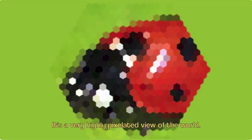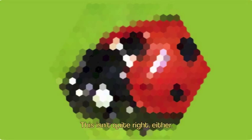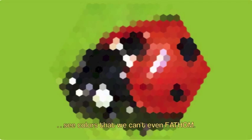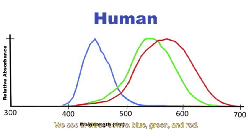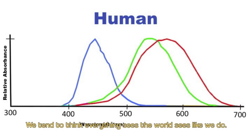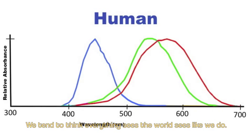It actually sees the world more like this — a very highly pixelated view. But this isn't quite right either. Animals with compound eyes see colors that we can't even fathom. We see three colors: blue, green, and red. We tend to think that everything sees the world like we do — it's not quite true. There are a lot more colors out there.